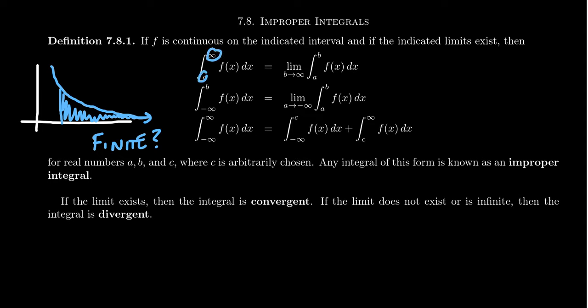This is really a limit calculation. Whenever you're working with infinity, you're taking a limit of some kind. We're taking the limit as the upper bound of the integral goes off towards infinity — that's what the integral from a to infinity means. Similarly, we can define the integral from negative infinity to b, which is just shorthand for a limit: take the limit as the lower bound a goes towards negative infinity.